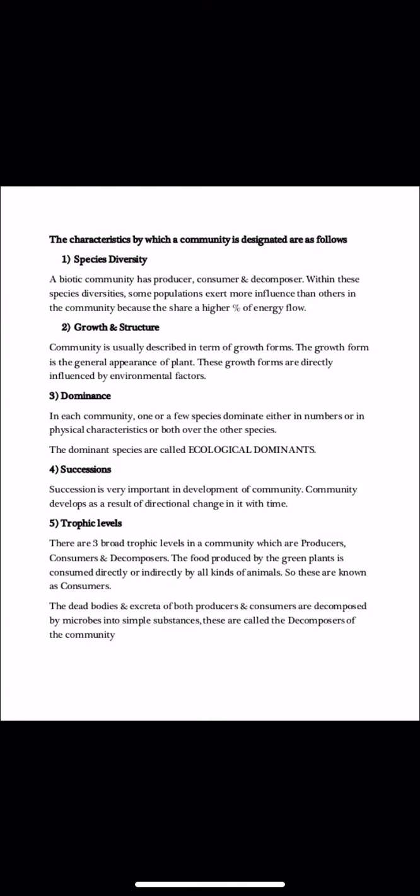There are certain characteristic features by which any community is designated. The first is species diversity. Each community is made up of many different organisms — plants, animals, microbes — that differ taxonomically. This variety of organisms lives in any plant community, and the number of species and population abundance in a community also vary.